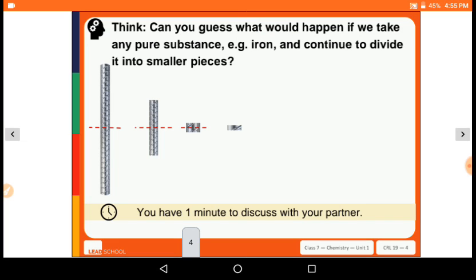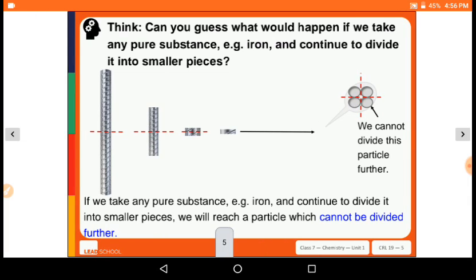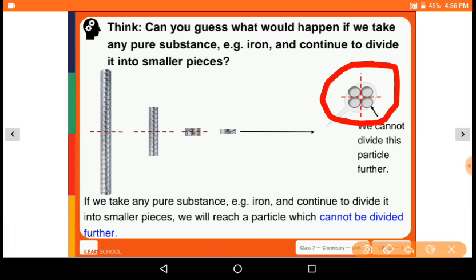Next, steel is a mixture or alloy while iron is a pure substance. Can you guess what would happen if we take any pure substance, for example iron, and continue to divide it into smaller and smaller pieces? If we take any pure substance and continue to divide it into smaller pieces, we will reach a particle which cannot be divided further.